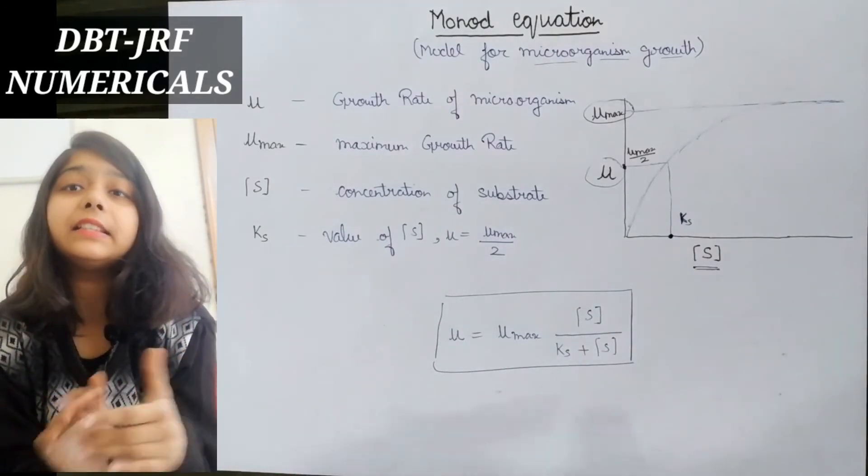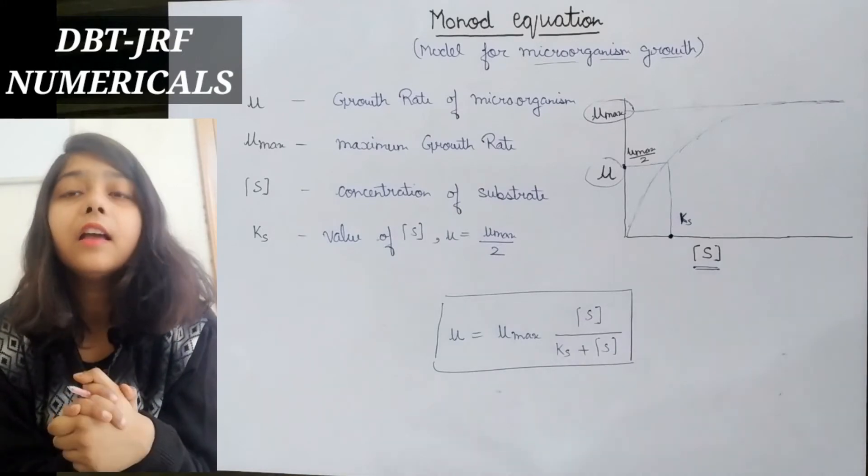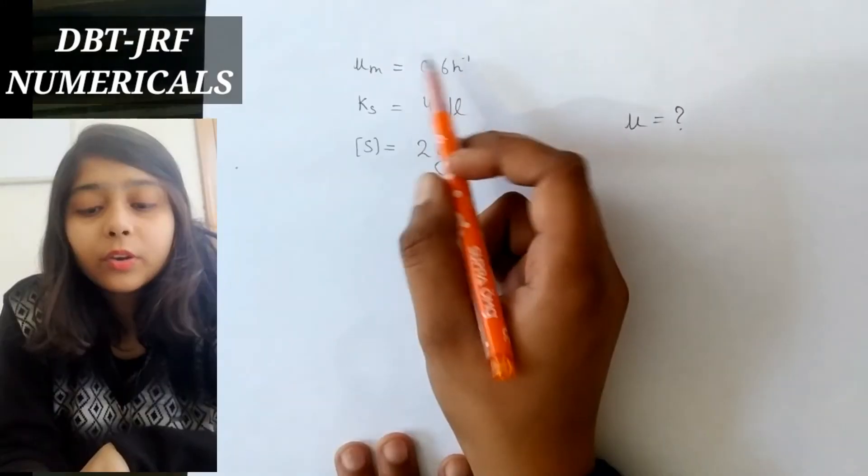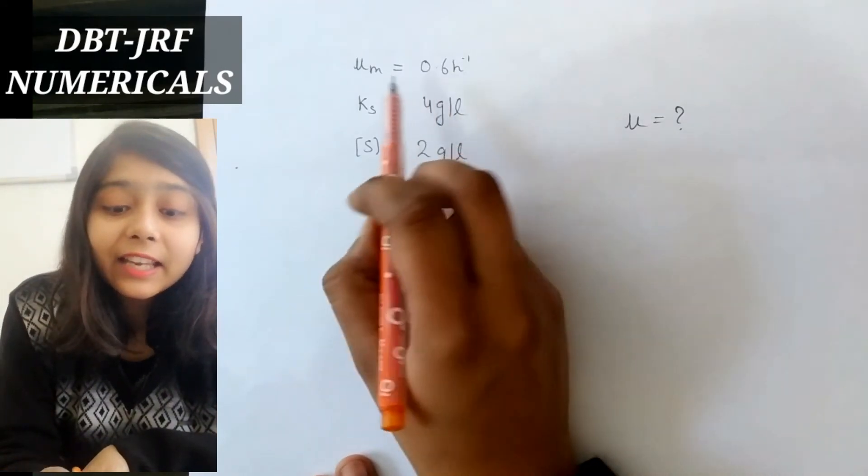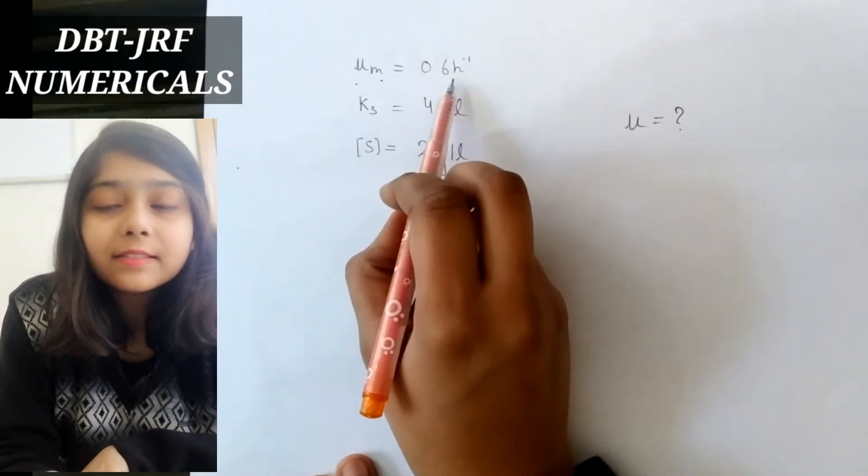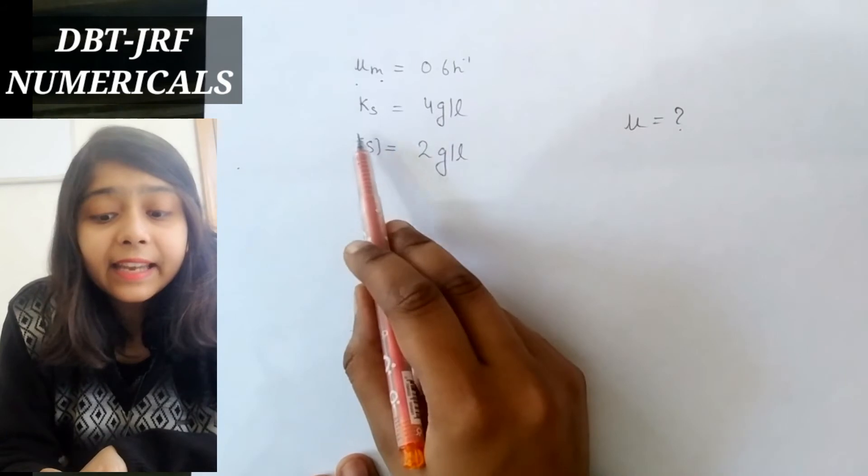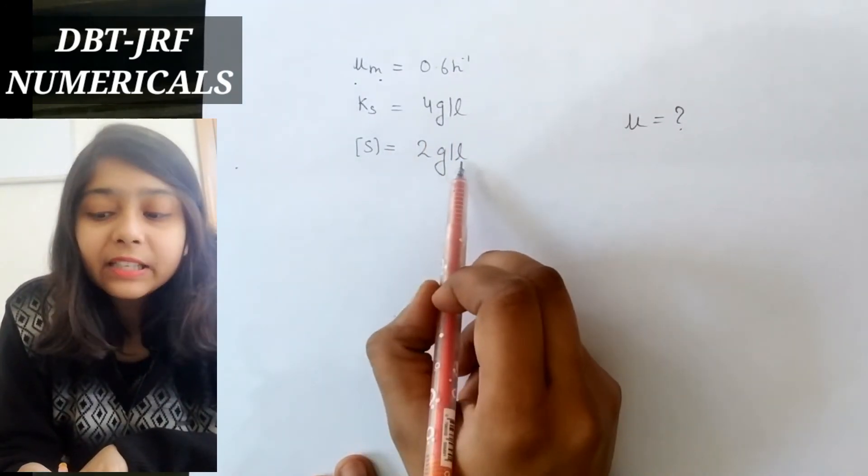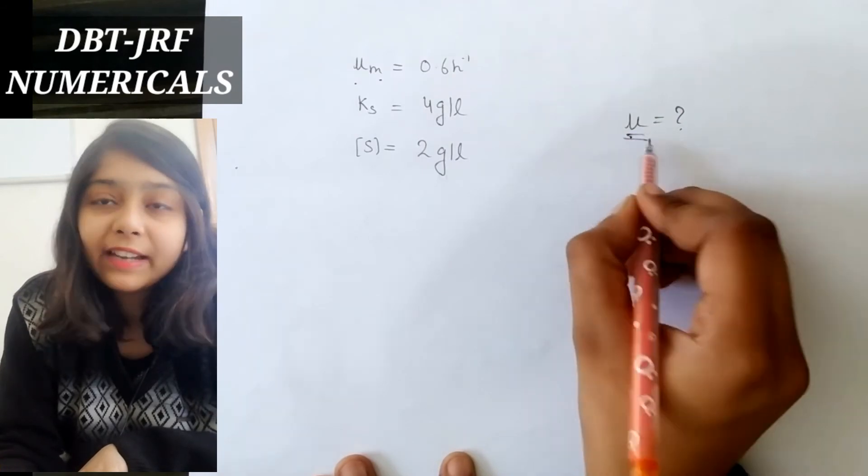Let's take 2019 question from DBT-JRF exam. Given: mu max is 0.6 per hour, ks is 4 gram per liter, substrate concentration is 2 gram per liter, and we need to find mu.